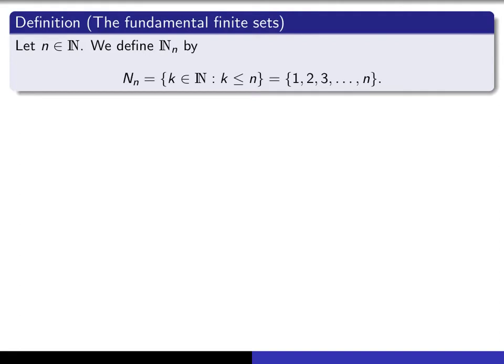So here we give a basic definition. We give ourselves a natural number, little n, and we define N sub n to be the set of all natural numbers from 1 up to n. And the idea of introducing these sets is that we're going to use them to compare other finite sets to these things.